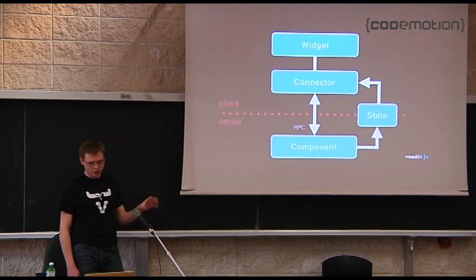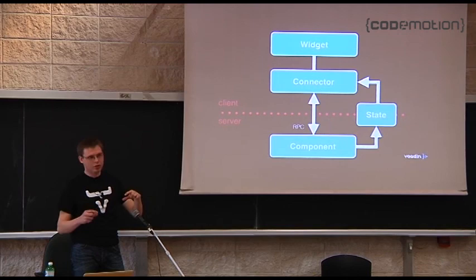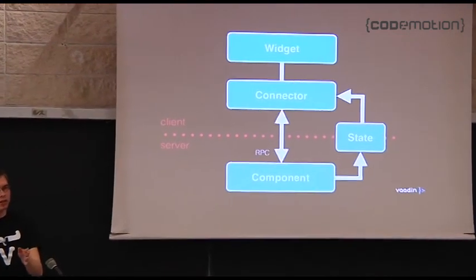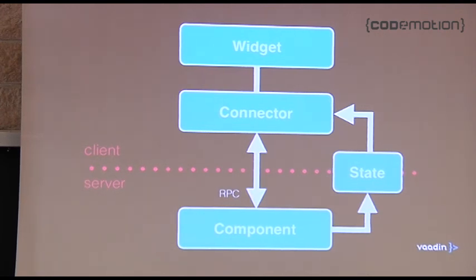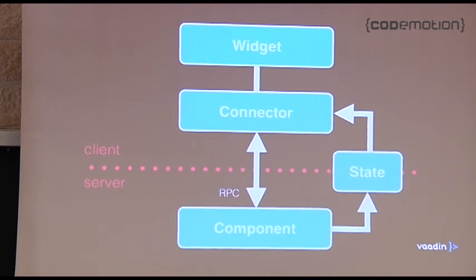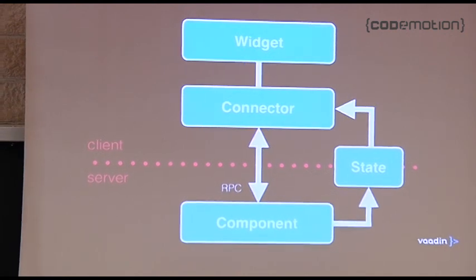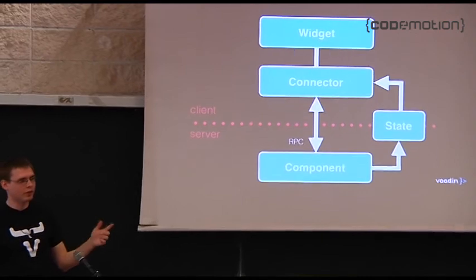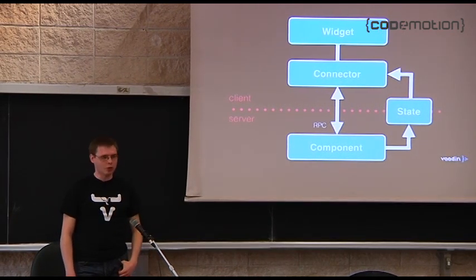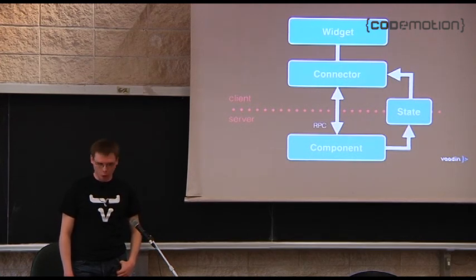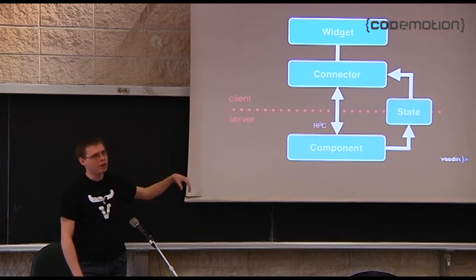How this works is that on the server you have a component — for instance, a button — which has some state, like text saying 'click me.' This state is sent by the framework to a connector that lives in the browser, and this connector controls the user interface widget. It also provides a means of communicating things back through RPC. Everything is defined by a Java state class and an RPC interface declaration, so everything is serialized and sent between the server and browser automatically — no need to convert anything to JSON yourself. You usually just use the server-side component and don't need to care about anything else.